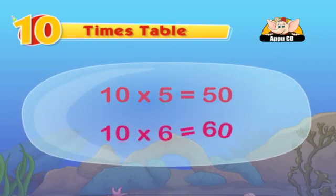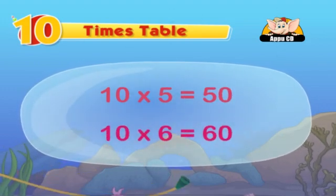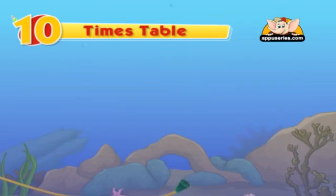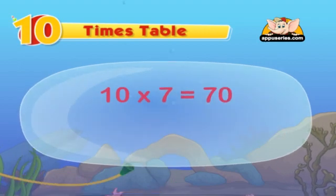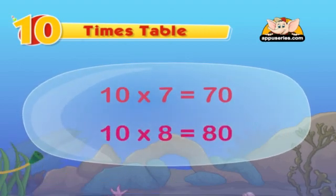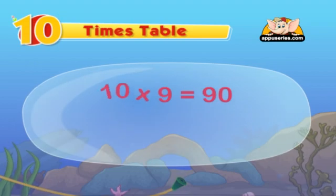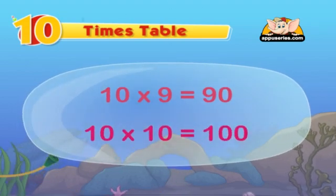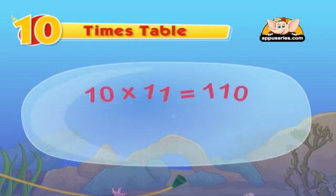10 six are 60. And that's how the tens table will be. 10 sevens are 70, 10 eights are 80, 10 nines are 90, 10 tens are 100.